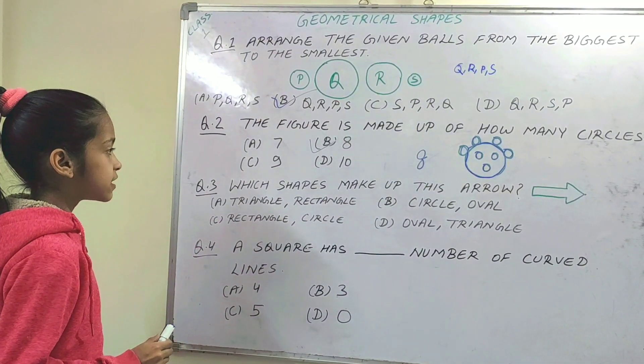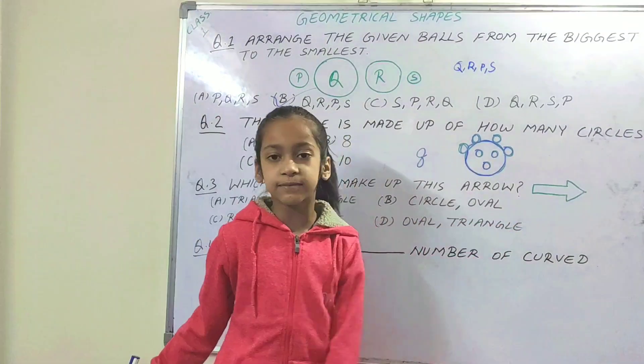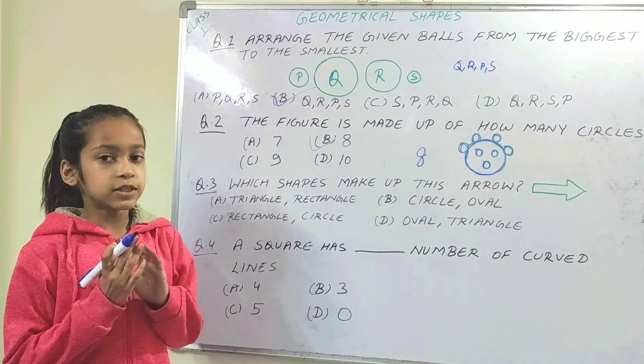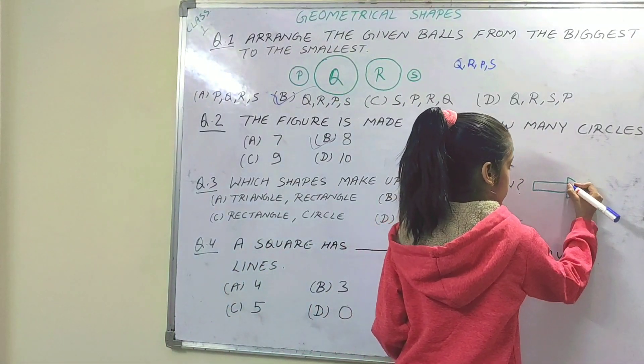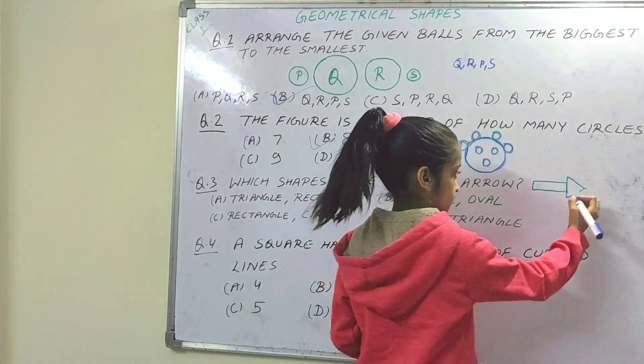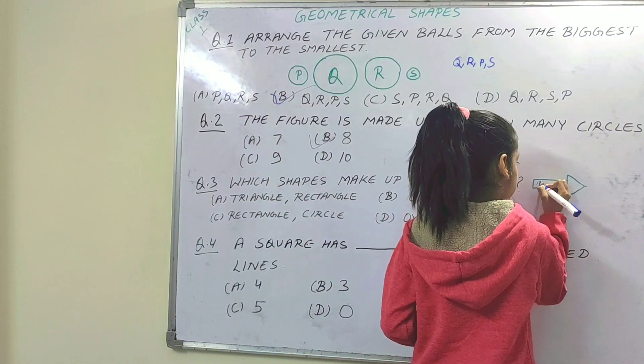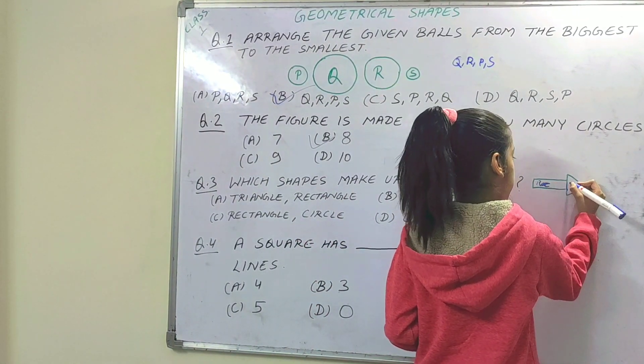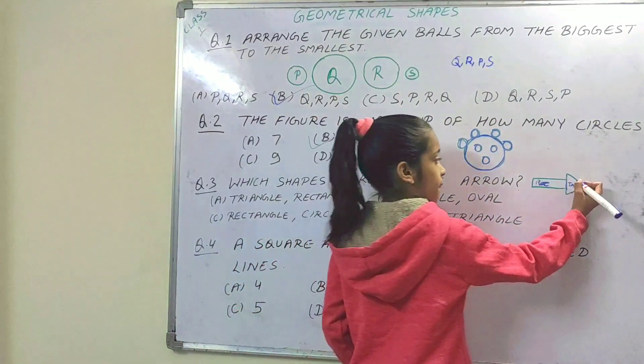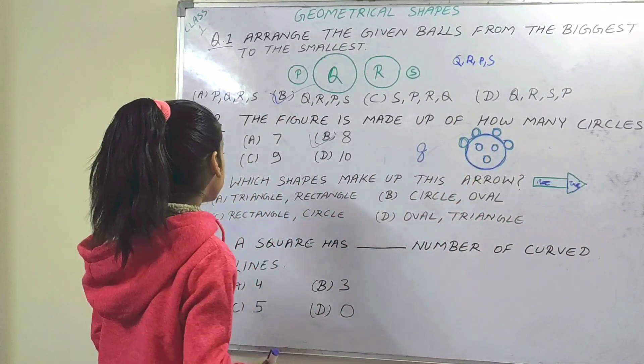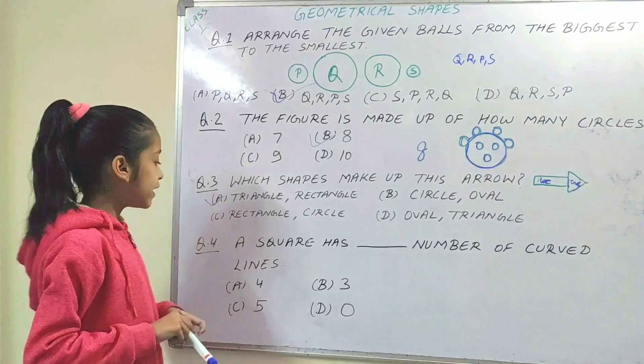Next question. Which shapes make up this arrow? So we have to identify the shapes in this arrow. The right option is here. This is the right option.